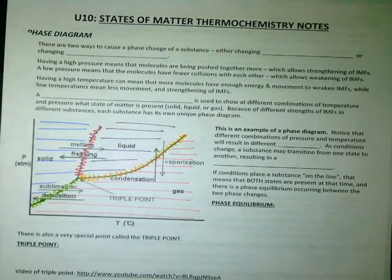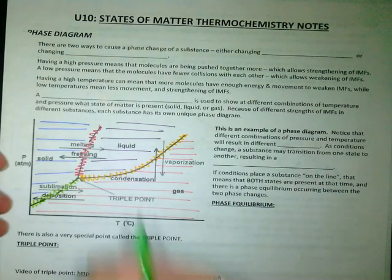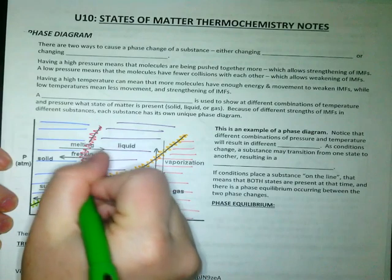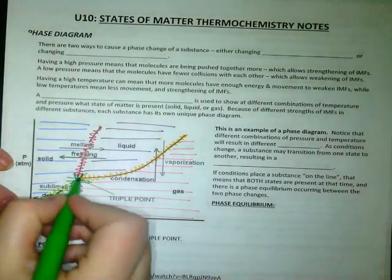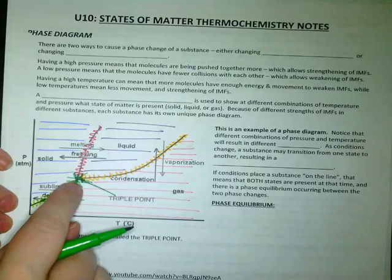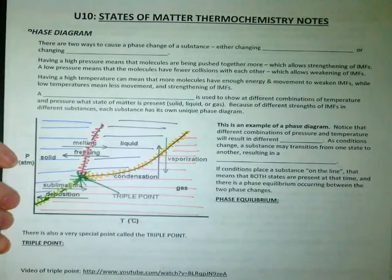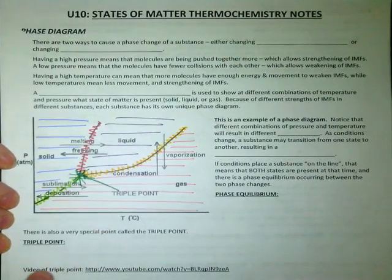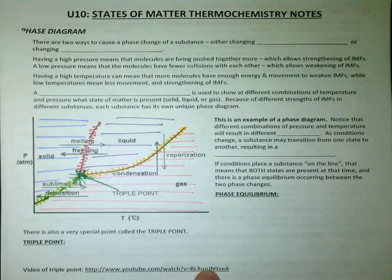The really cool spot on this graph is called the triple point. The triple point is where these three come together. To get a little bit better idea about what a triple point looks like, you should go check out the video that's here, and there's a link to it in the Google classroom as well, so you can see what it looks like when a substance is undergoing phase changes so that it has a solid, a liquid, and a gas all in the same place at the same time.